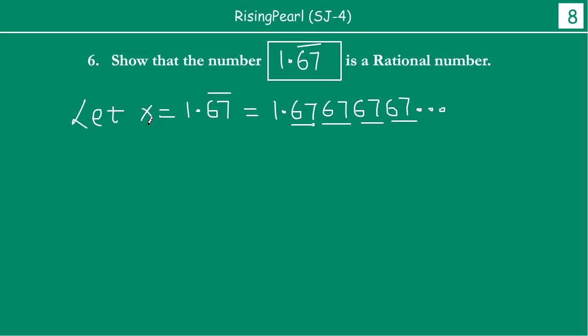So let's do this. Let us call that x. Now we have to multiply both sides by 10 to the power of something. So multiplying both sides, we have to multiply this by 10 to the power of something.